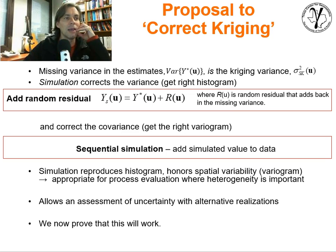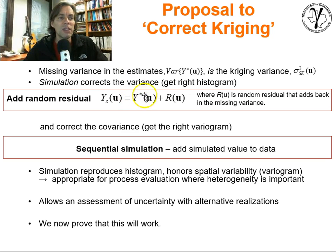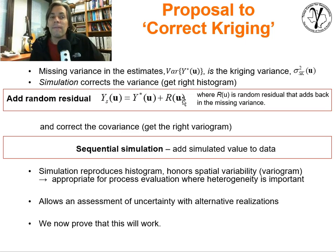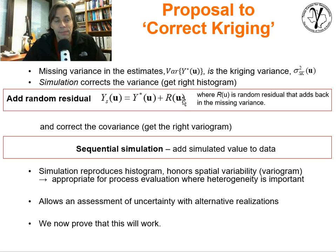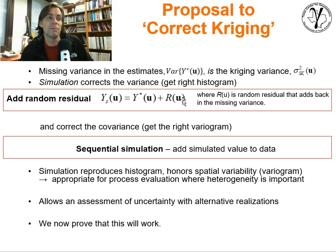Let's put together a proposal to correct kriging — a methodology whereby we can correct kriging so that we don't have the issue of not reproducing the histogram nor the variogram. We're concerned about the missing variance. We know the missing variance in the estimates is the kriging variance. We can use the simulation method to correct the variance to get the right histogram. That simulation method is to take the kriging estimate and add a residual to it — a random residual with a mean of zero and a variance equal to the missing variance, so we just add it back.